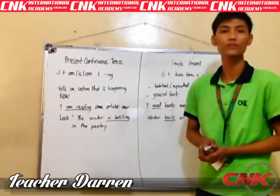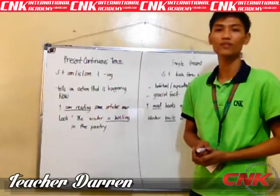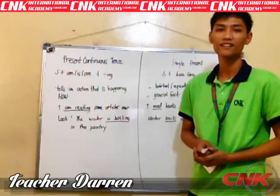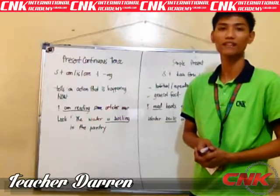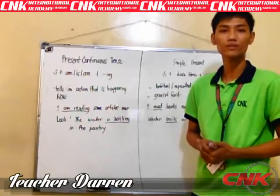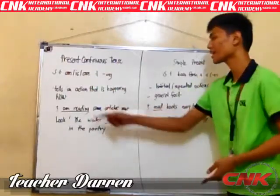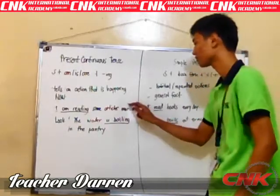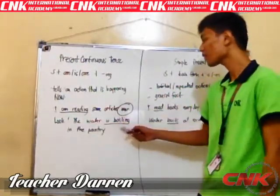What is present continuous tense? It tells us an action that is happening now. Look at your surroundings — what is happening now? For example: the birds are flying high, the sun is shining hot, the students are playing outside, other students are studying English. We use present continuous for an action that is happening now. For example: I am reading some articles now. Look — the water is boiling in the pantry.